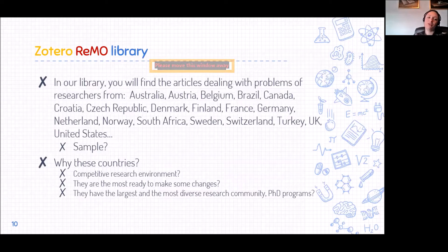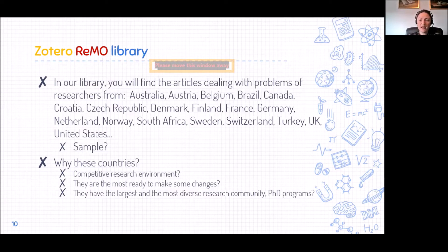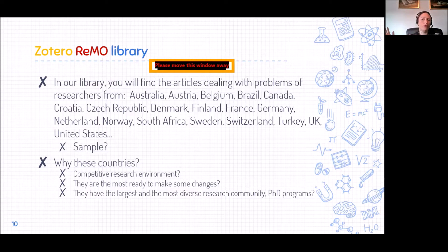Regarding our Rimo library, you will find articles dealing with problems of researchers from Australia, Austria, Belgium, Brazil, Canada, Croatia, Czech Republic, Denmark, Finland, France, Germany, Netherlands, Norway, South Africa, Sweden, Switzerland, Turkey, UK, and the United States. There are also reports where researchers used sampling procedures — giving a link to a questionnaire to a large community of PhD students or researchers — where you can't clearly identify cultural background or nationality. So this list could be even larger. I was wondering why these particular countries.